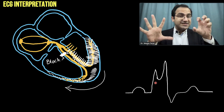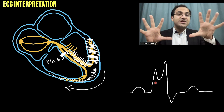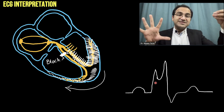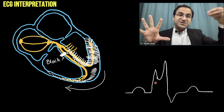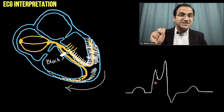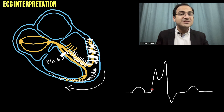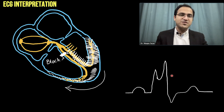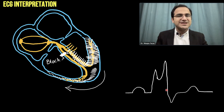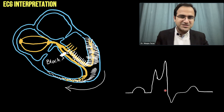The left ventricle contracts and depolarizes first, producing the first wave. Then signals are transmitted from the left to the right side, the right ventricle depolarizes, and you see the second wave. This is called an M wave, also called rabbit ears — the classical feature seen in bundle branch blocks.